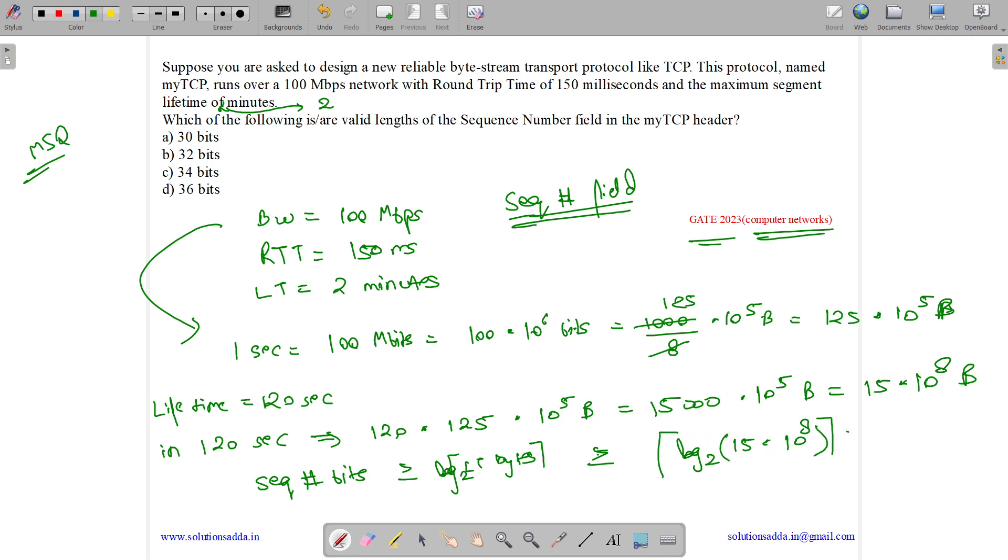Its value will come out to be 30.48 upper bound, so anything greater than 31 would be fine. What options are correct? 32, 34, and 36. So the answer is options B, C, and D.